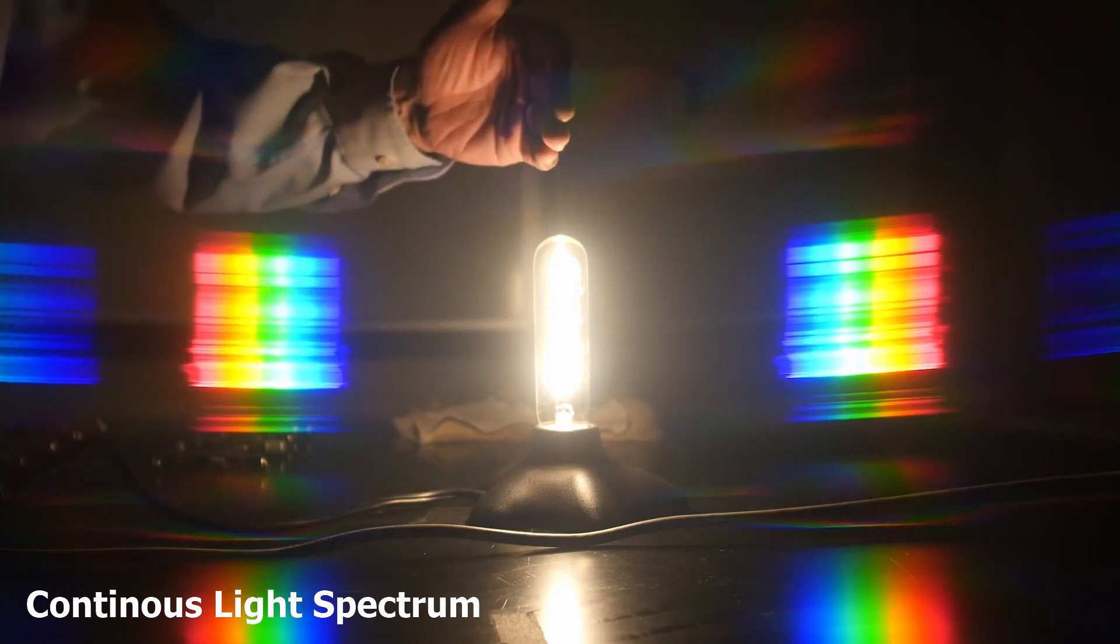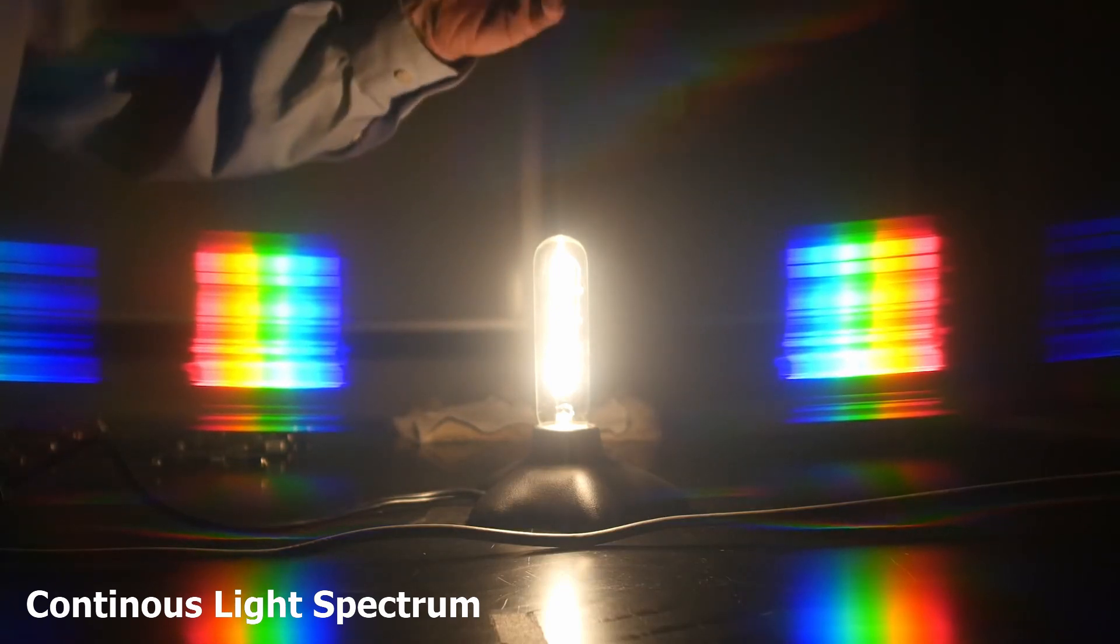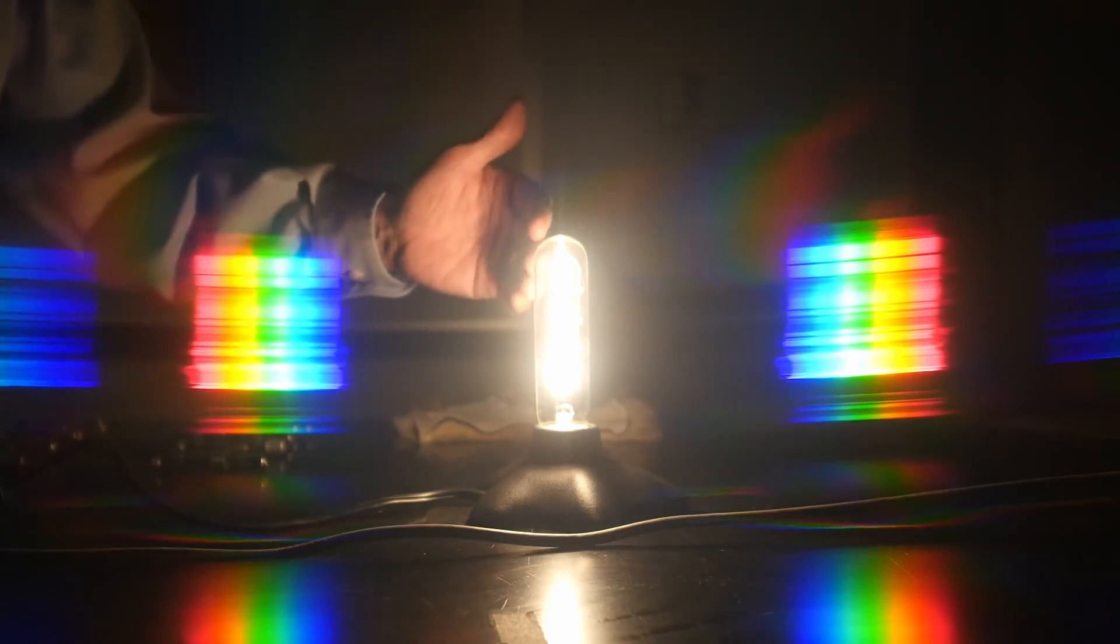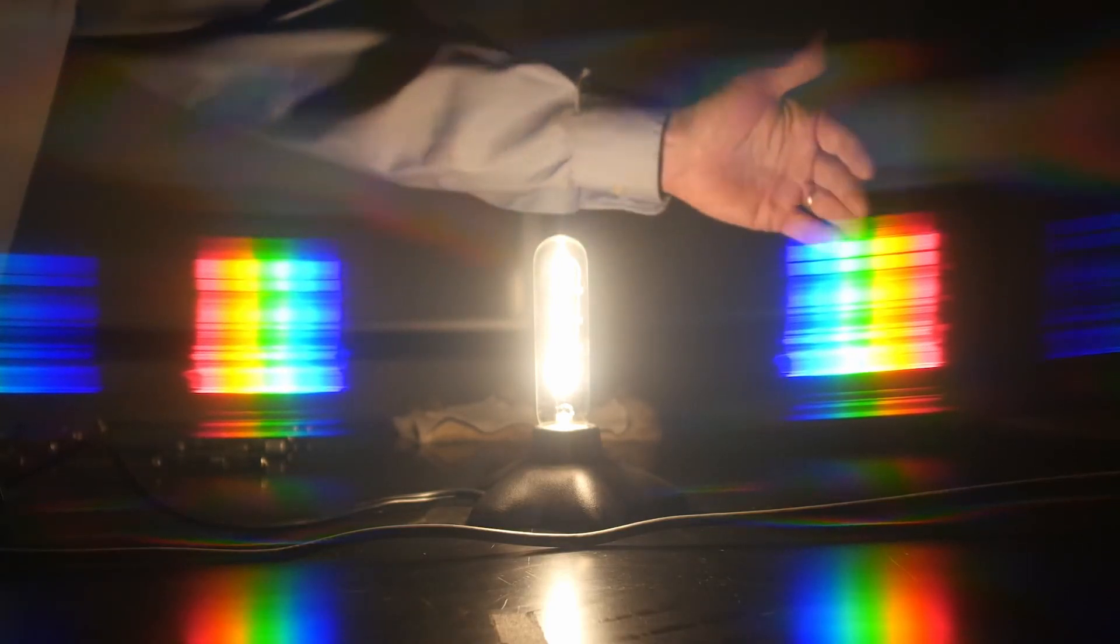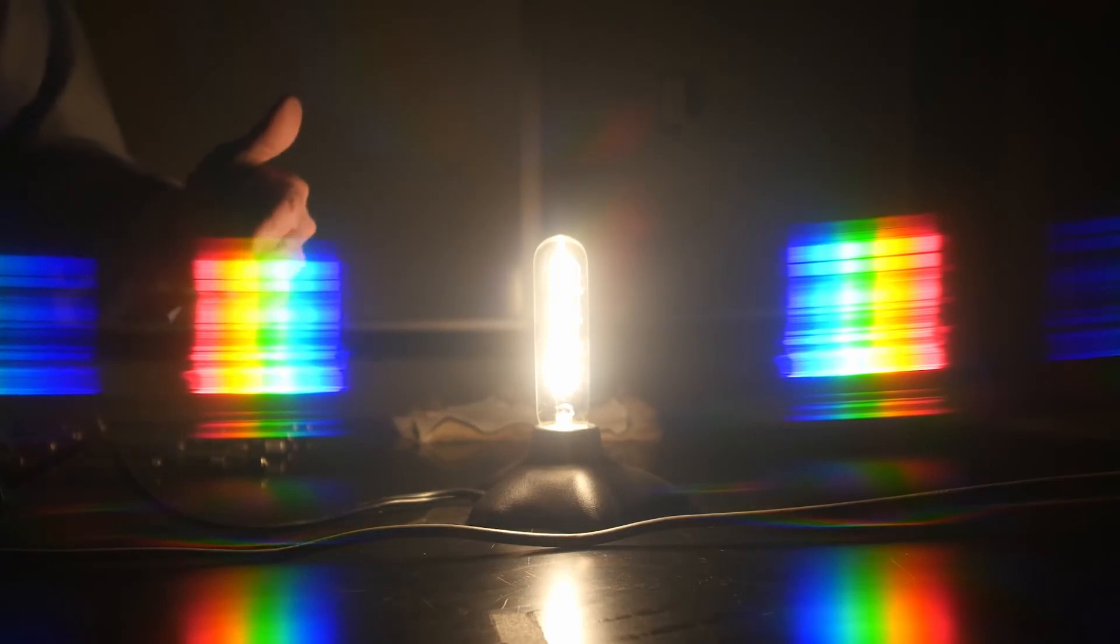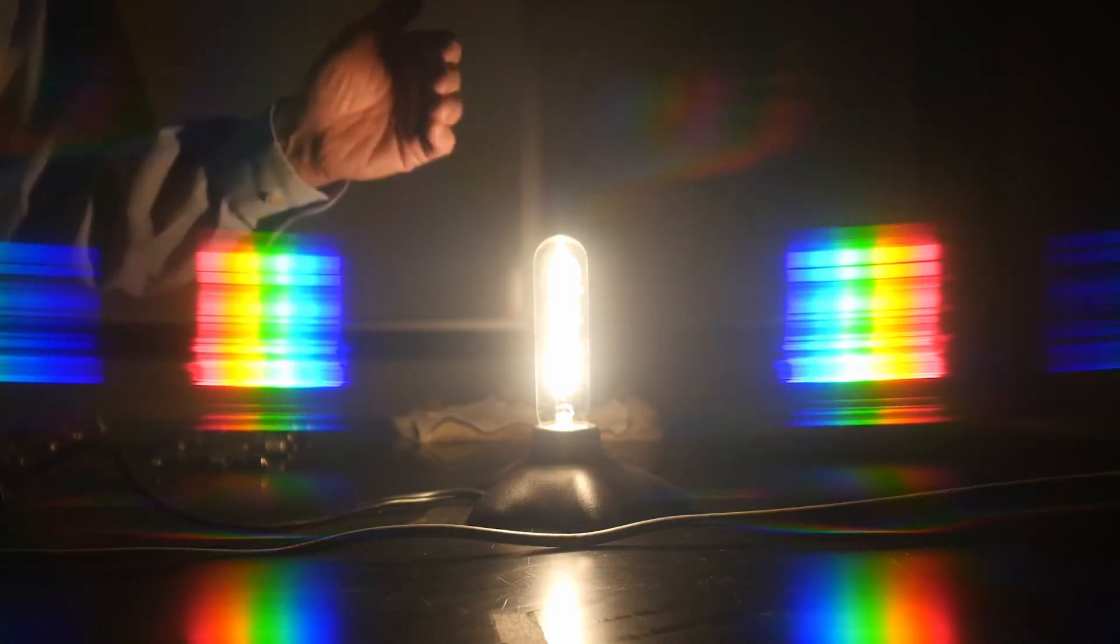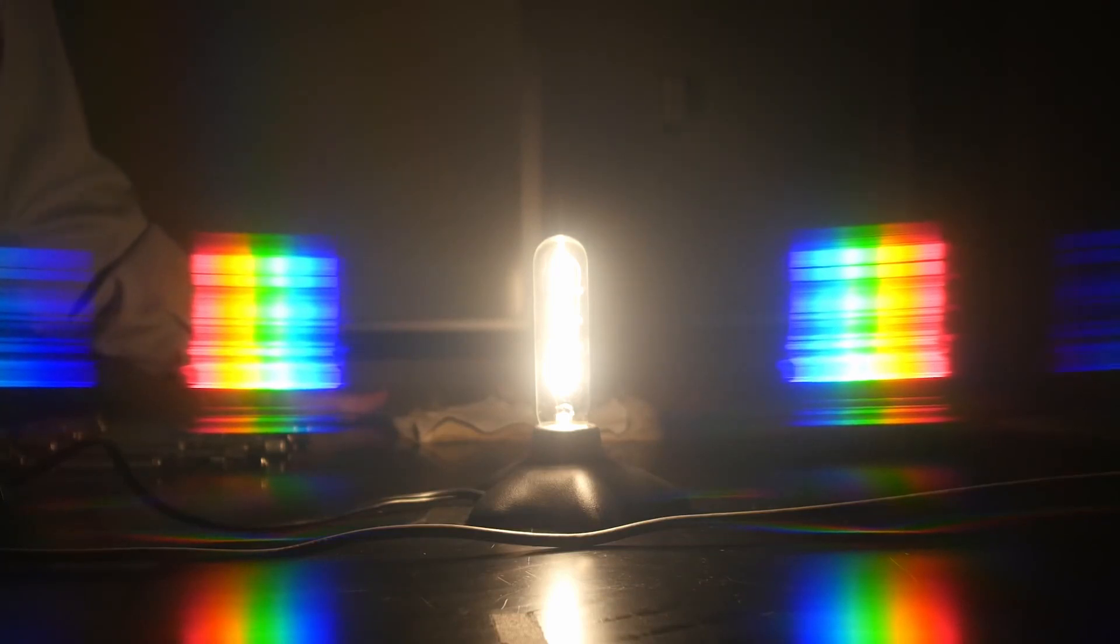And what you'll see in the image is the image of the incandescent bulb itself. And then to the right and to the left, you'll see a rainbow spectrum that shows what wavelengths are present in this.